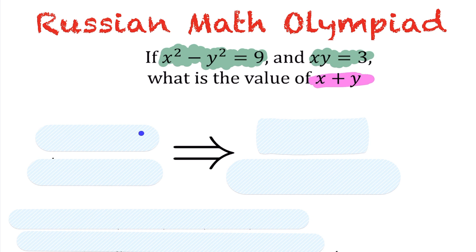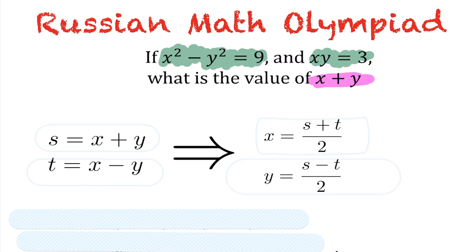So to start this off, we're going to define two variables, s and t. Let one be the sum of the variables and the other be the difference of the variables. From this, we get the following results: x is actually the sum of s and t divided by 2, and y is the difference of the s and t values divided by 2.